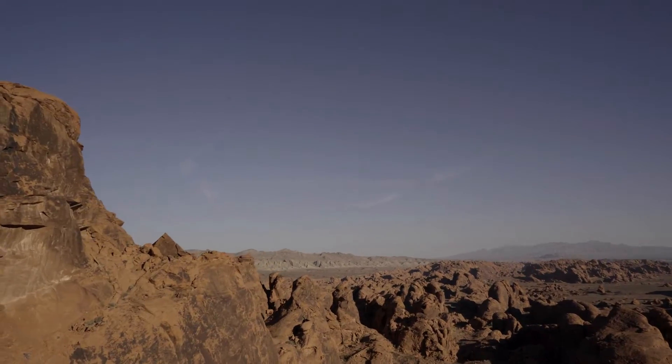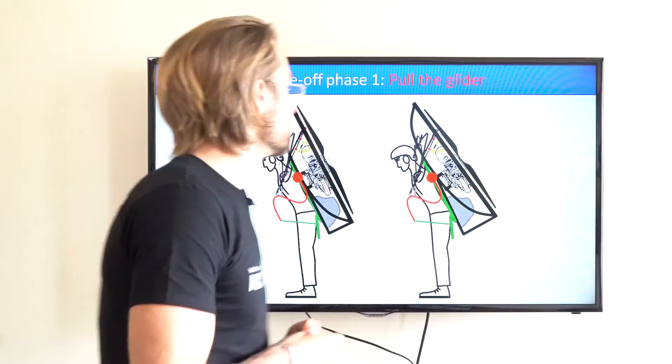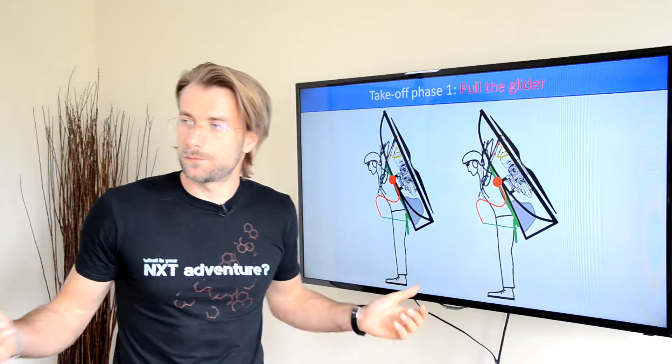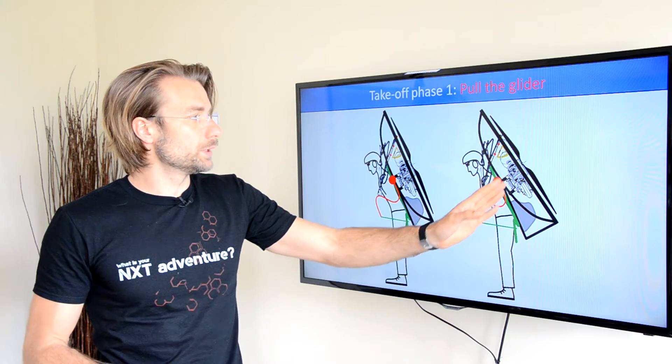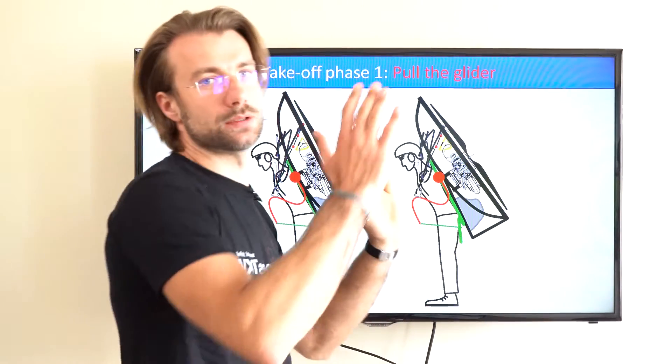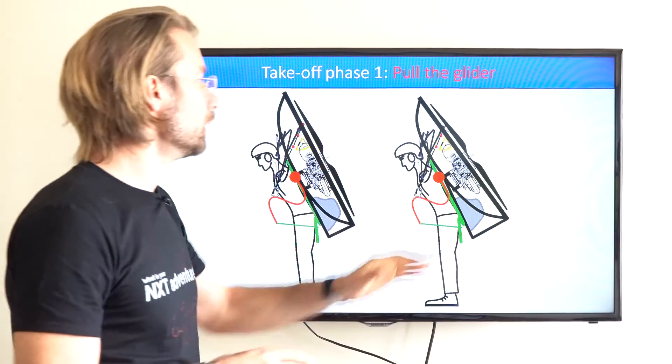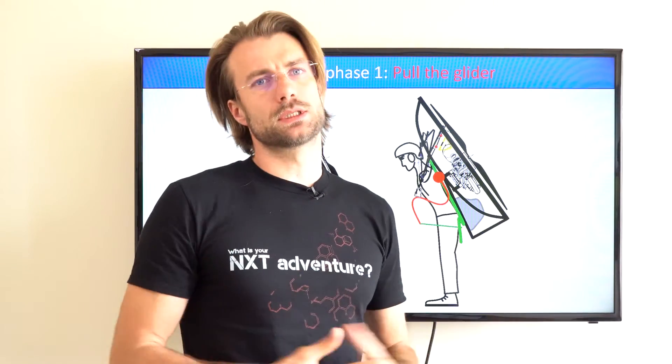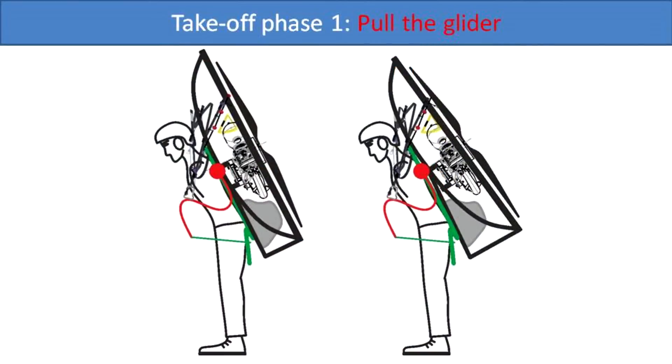There are some disadvantages, however, on the ground. Start with the takeoff phase number one. As you lean forward to pull the glider off the ground, this configuration adds another 10 degrees. Your cage is tilted a bit more forward and touches your risers a bit longer, which is honestly not a big deal. Both configurations are pretty equal.